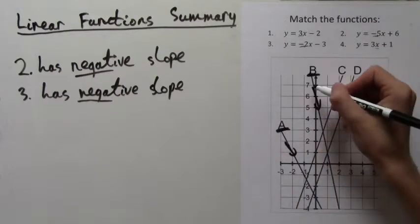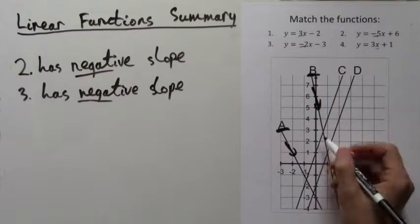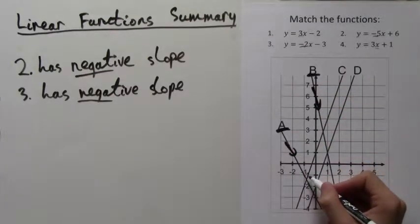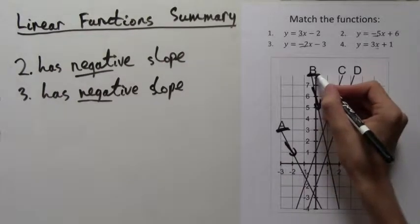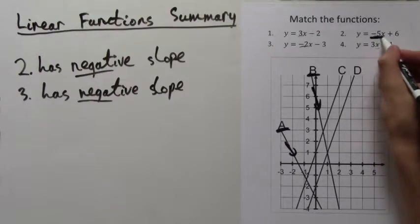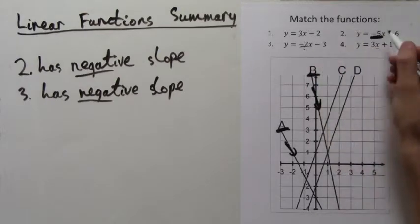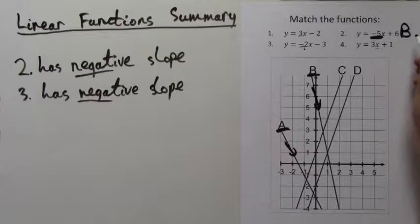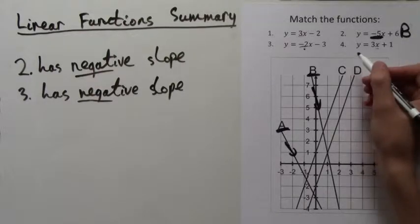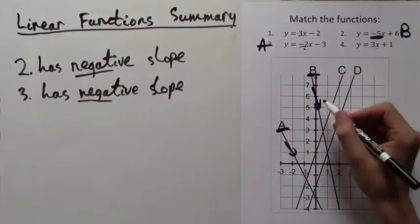But which one of A and B is 2 or 3? Well, notice that B is much steeper than A. And the slope negative 5 gives a line that is much steeper than the slope negative 2. So we know that B should correspond to the formula number 2. This leaves us with only A as a possibility for 3. So we've already answered two of them.